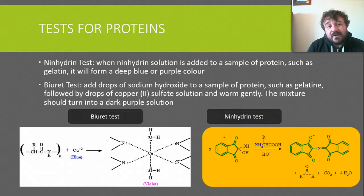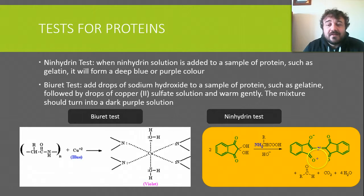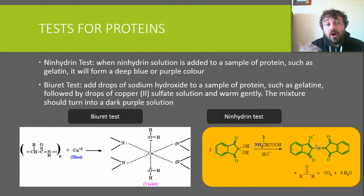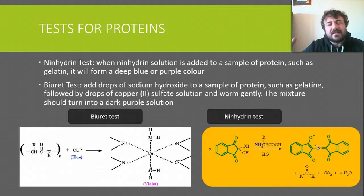We're going to look very quickly at the tests. You've got ninhydrin, which exists on its own, but in the presence of a protein it forms a double bond with itself and the nitrogen — it takes the nitrogen away, forms this double bond, and makes a purple color. It's used for all sorts of things, particularly fingerprints. If all the oils and water have evaporated from old fingerprints, they use ninhydrin because it bonds to the proteins left behind from the cells you shed when you put your finger down — about 10,000 cells — and it pops up a nice clear fingerprint.